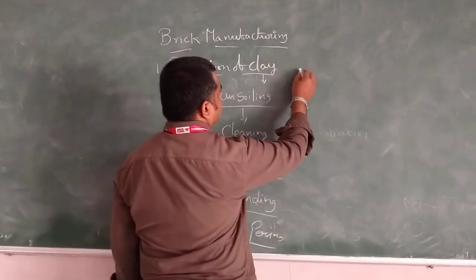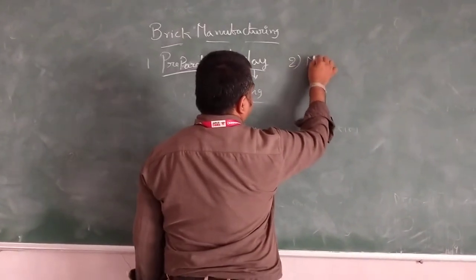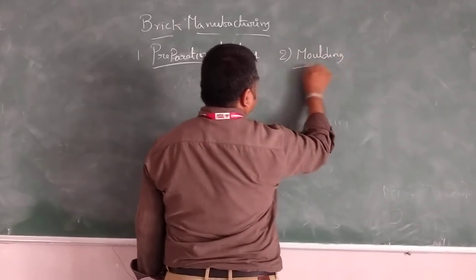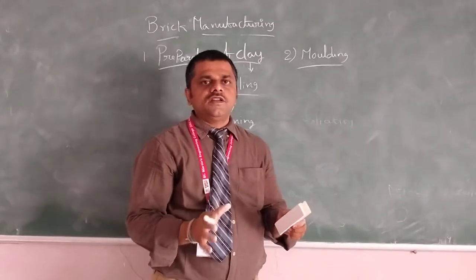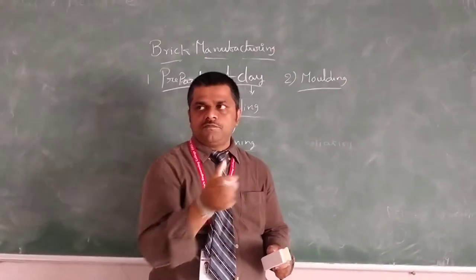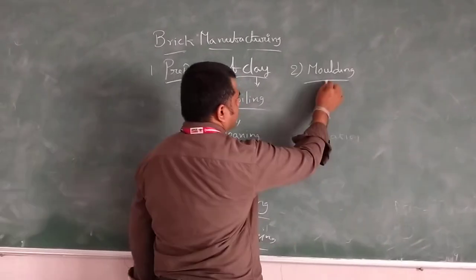What is the next one? Next one is molding. In molding, there are two types of moldings: hand molding and machine molding.